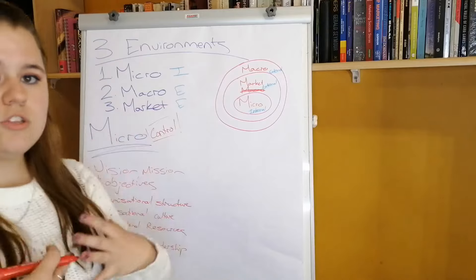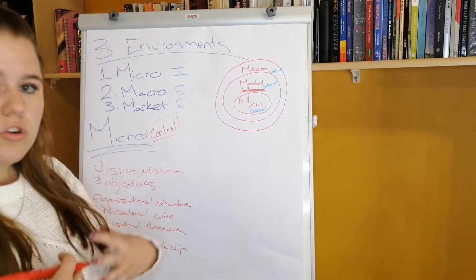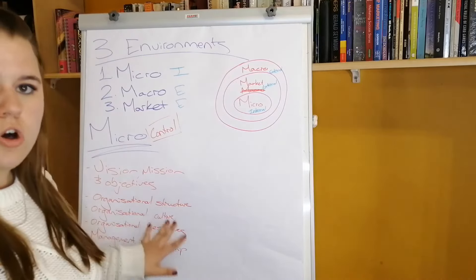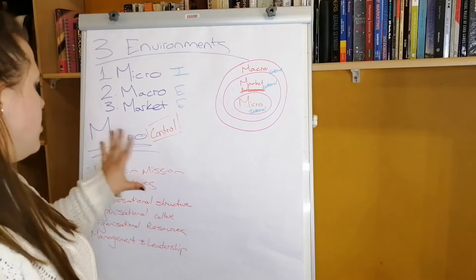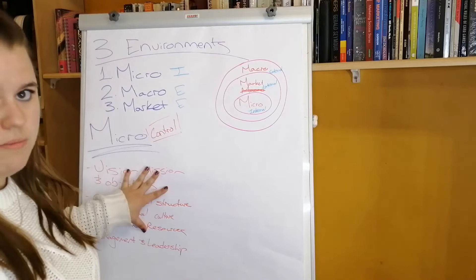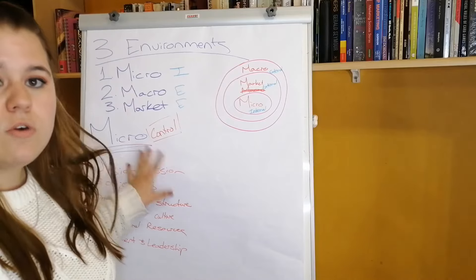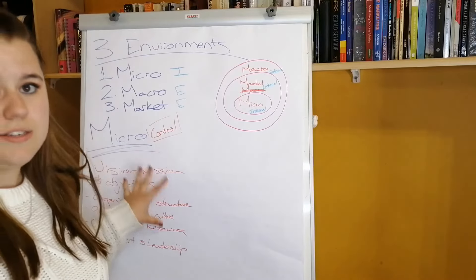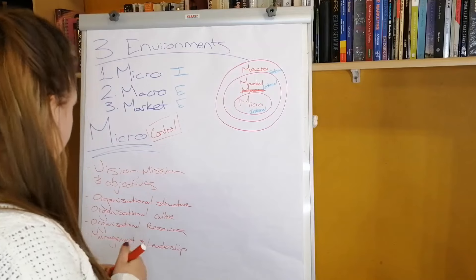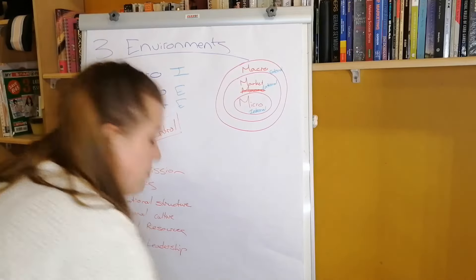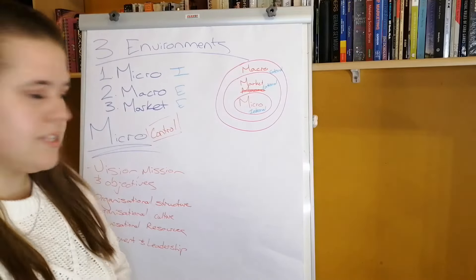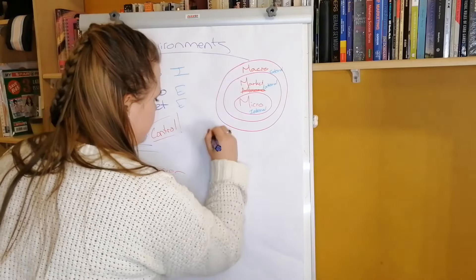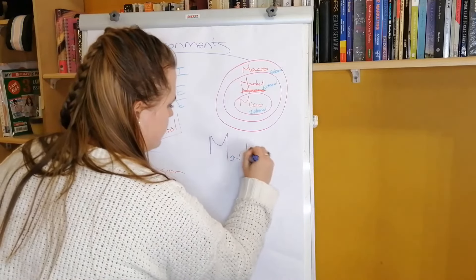It's important to note that the micro environment is controllable. You're able to control the micro environment because it's internal within the business — you can control the organizational structure, the culture, the vision and mission. I'm going to do another video where we will explain the micro environment in more detail.